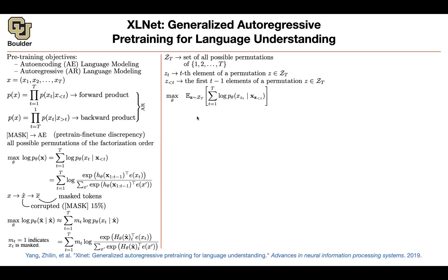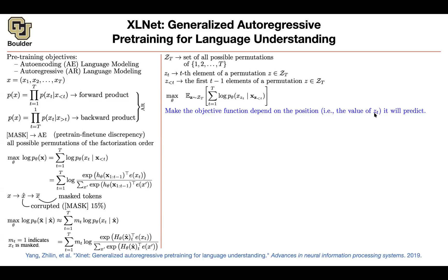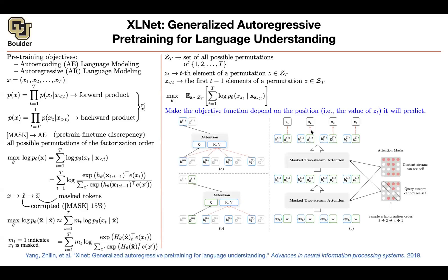So you have an expectation over the permutations, which you can compute as a summation over all permutations in a Monte Carlo fashion. But there is a catch. In the forward or backward model, when you are predicting word T, you know the index — you are sitting at location T predicting word T. But once you do your permutation, you're going to lose the position. You're going to know what X_{Z_T} is, but you're not going to know what Z_T is.